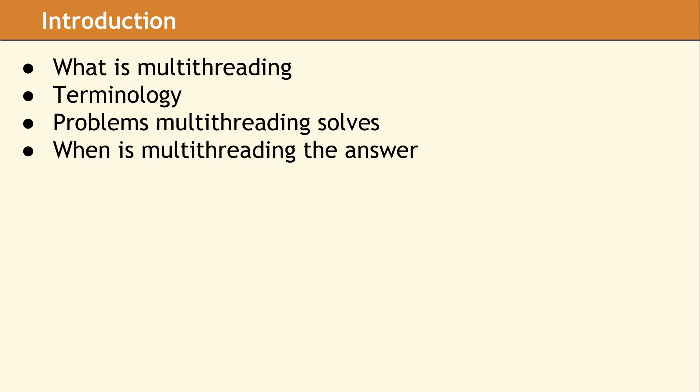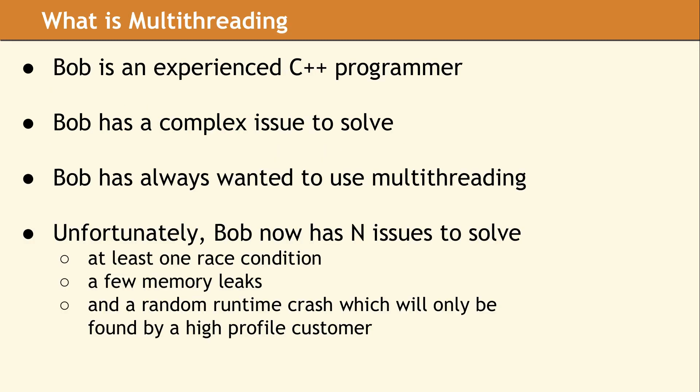In this video, we're going to be discussing what multithreading is, which will involve developing some terminology. We'll also be talking about the kinds of problems that multithreading is good at solving and when multithreading should be used. One of the issues with multithreading is programmers sometimes believe this is a complex problem, so multithreading must be the answer. Multithreading is not the answer to every complex problem.